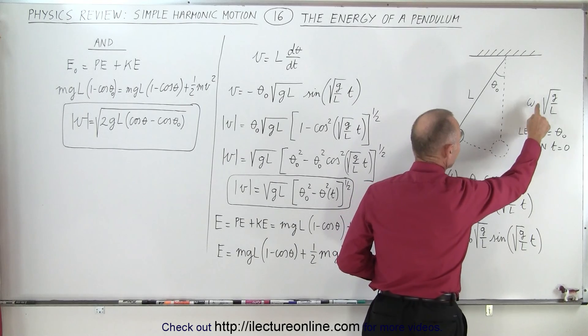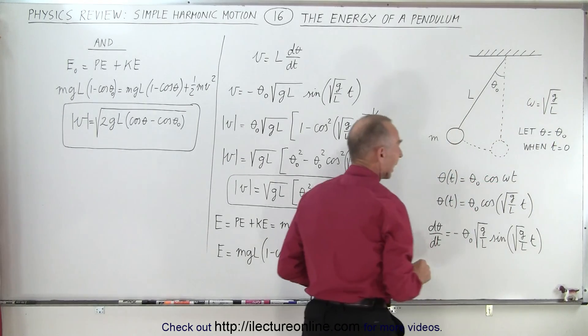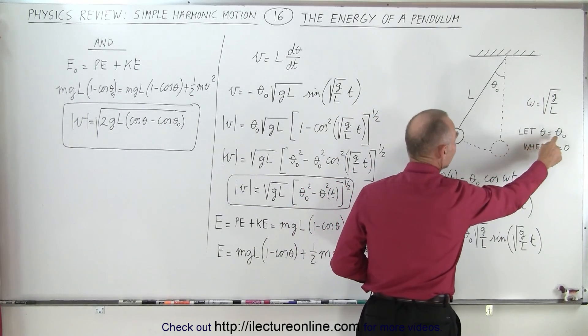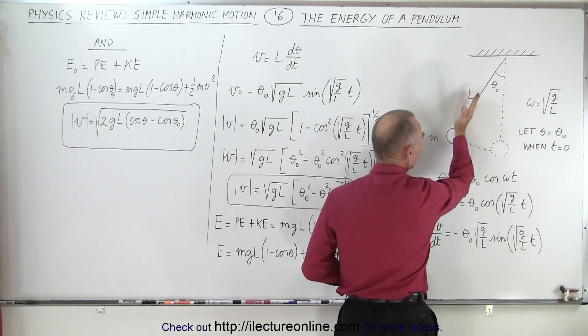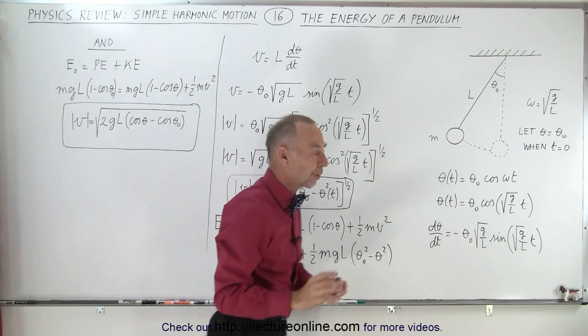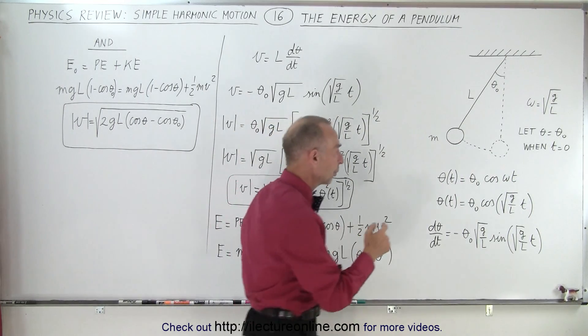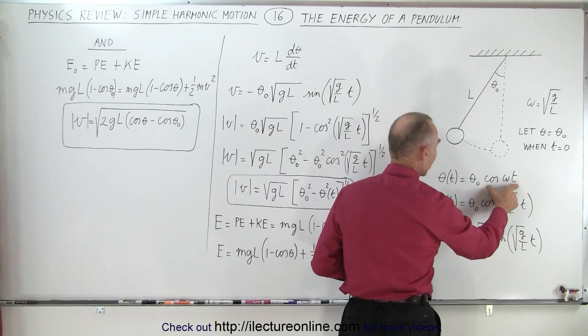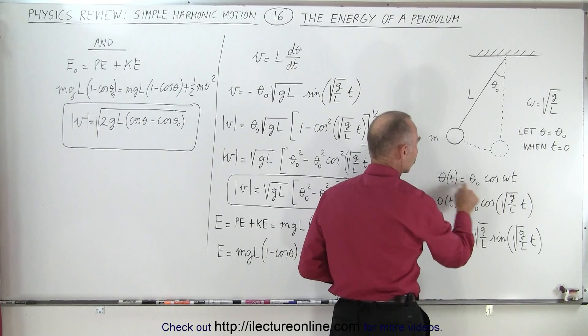Our angular frequency is still going to be the square root of g over l. And we're going to let theta equals theta initial. We're going to start at this position when time equals zero, so we need the cosine function to describe that motion, because when t equals zero, the cosine of zero is one, and so the angle will be at the initial angle.